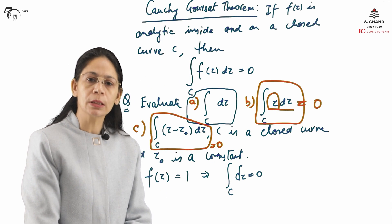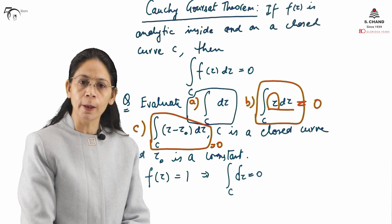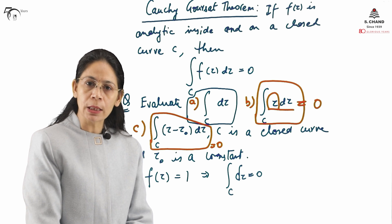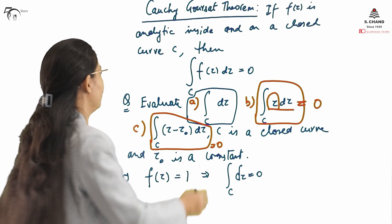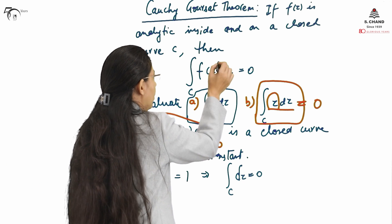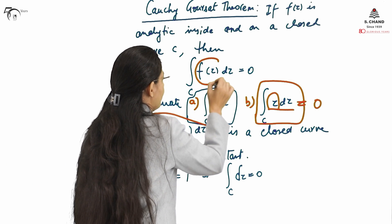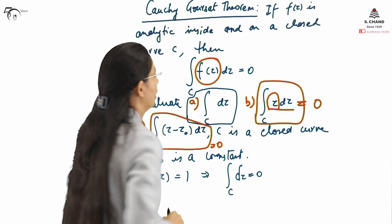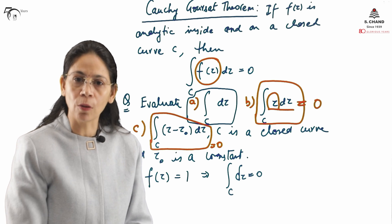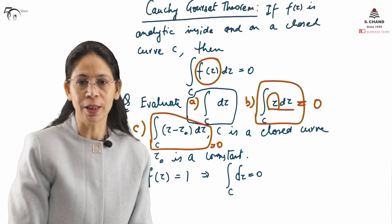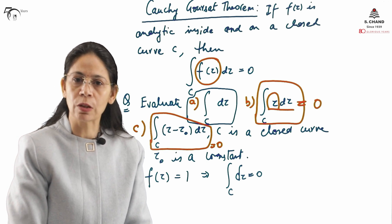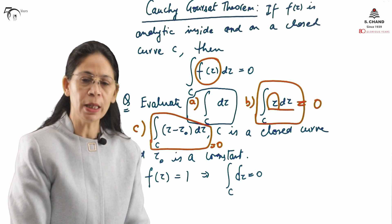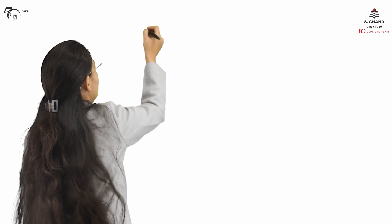This is a very powerful theorem for calculating contour integrals. If it is established that f(z) is analytic inside and on the closed curve C, then there is no need to calculate the integral — the value will always be zero.